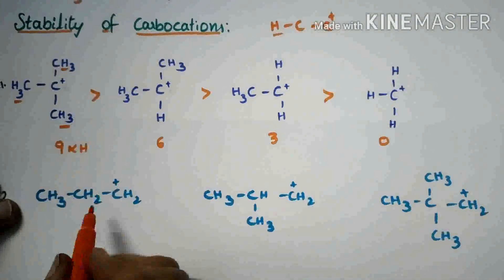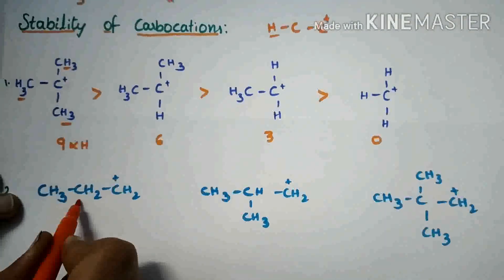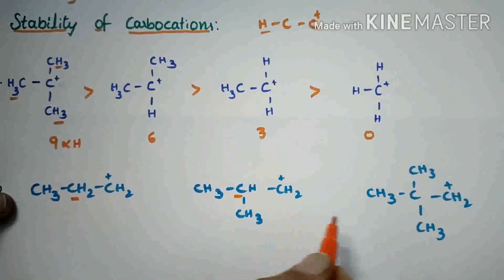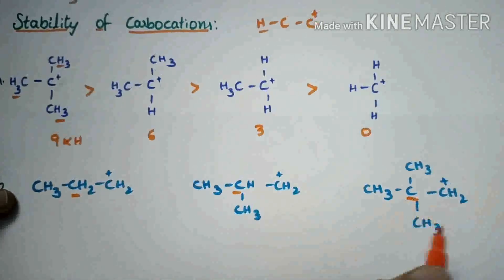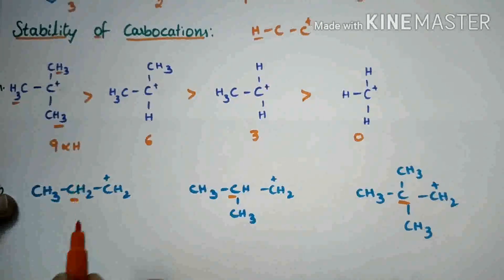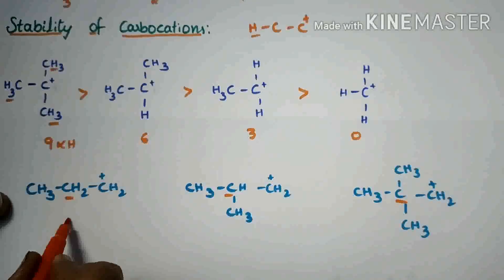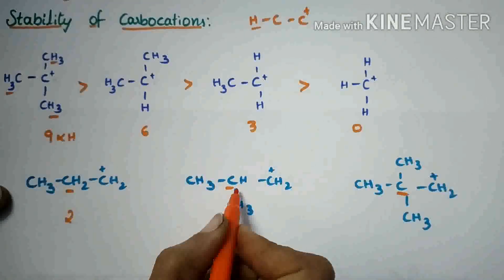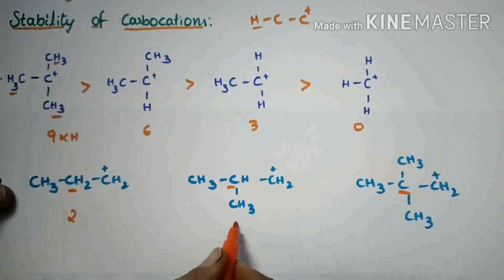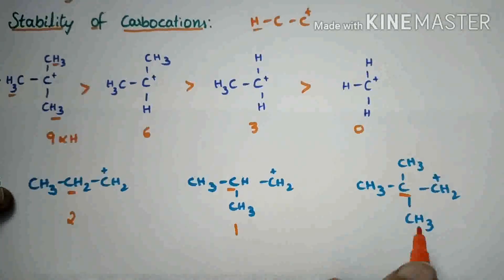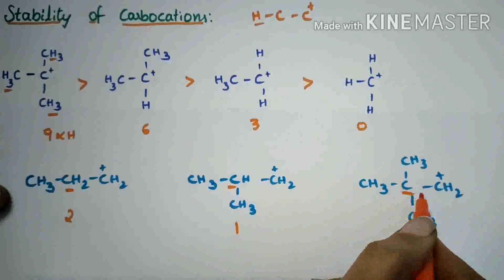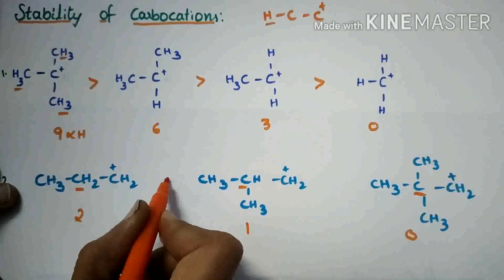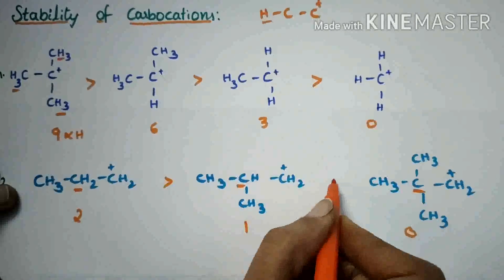Next, here this is the alpha carbon. These are the alpha carbons. These are the alpha hydrogens — two alpha hydrogens. Here, only one alpha hydrogen. Here, there are no alpha hydrogens. So the stability order is as follows.